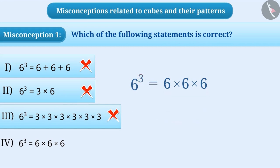The correct understanding is that the cube of a number means multiplying that number three times by itself. With this understanding, the correct answer is option 4.